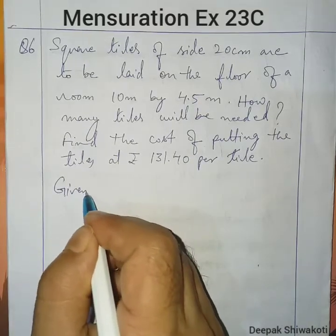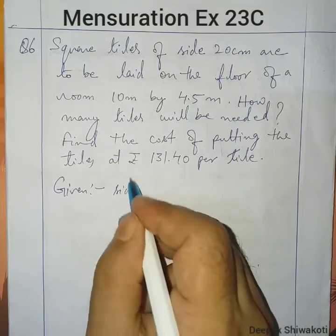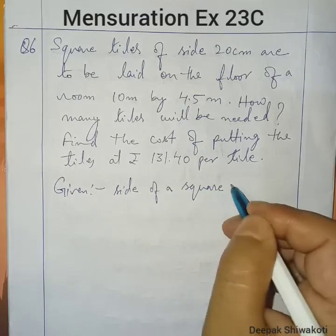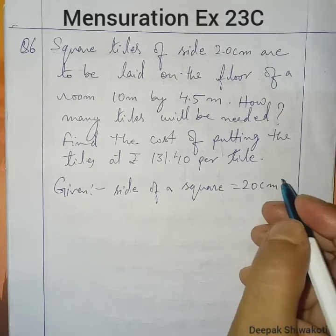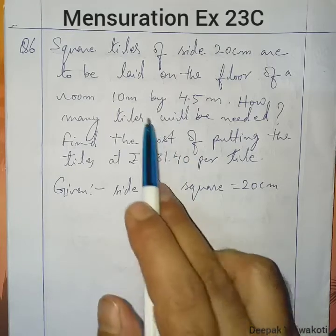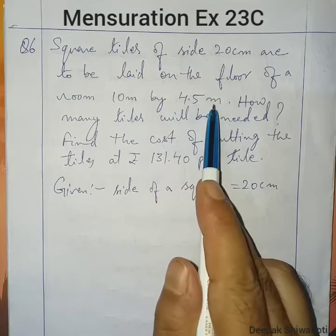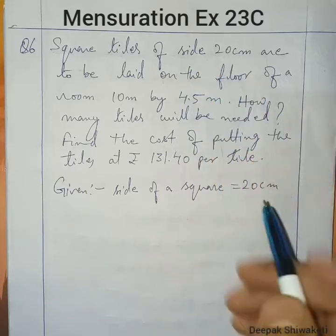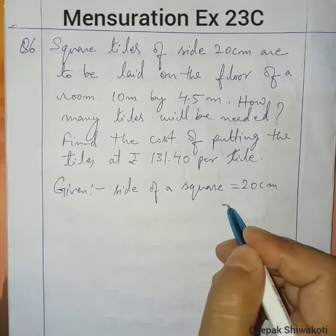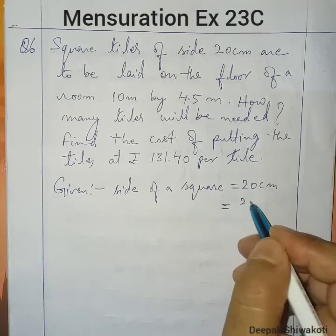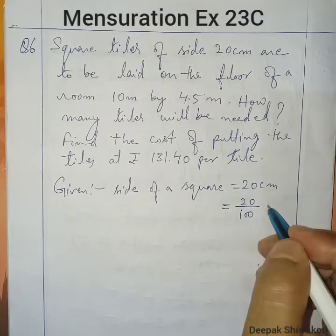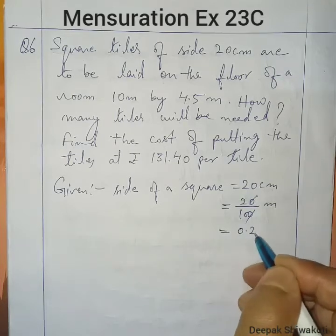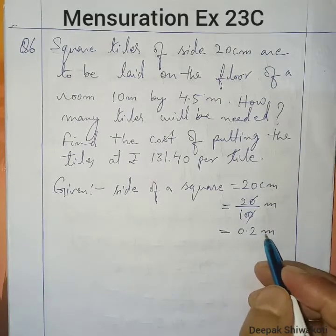Given: the side of a square tile is 20 cm. You can see that length and breadth are given in meters, but the side of the tile is given in centimeters. So let us convert it to meters. Centimeter to meter — we divide by 100. So 20 cm becomes 0.2 meters. The side of the square tile is now 0.2 meters.